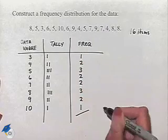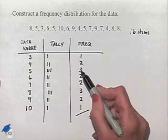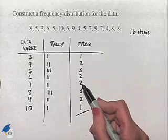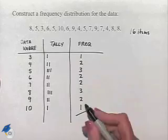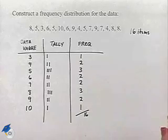And we can double check by adding up our frequencies. We have 3, 6, 8, 10, 13, 15, 16. So we know we have all accounted for.